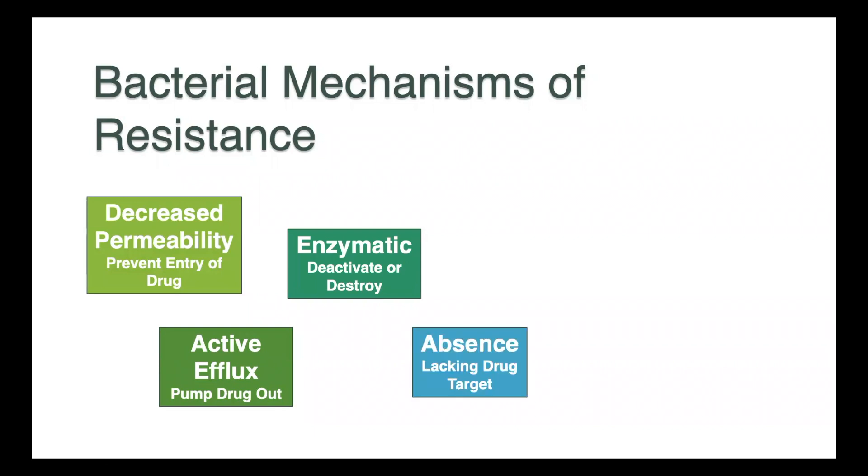We can have resistance by absence, so the drug target simply doesn't exist in a particular species or genus. We can have target modification or disguise. So the normal target within the bacteria which the drug binds to is subtly different, such that the drug is not able to recognize its substrate, it doesn't bind, and it doesn't kill the organism.